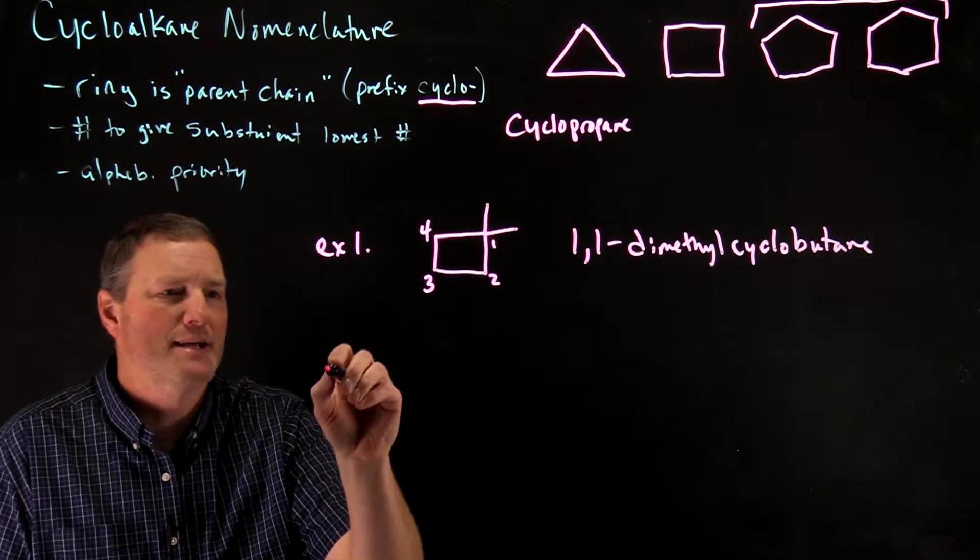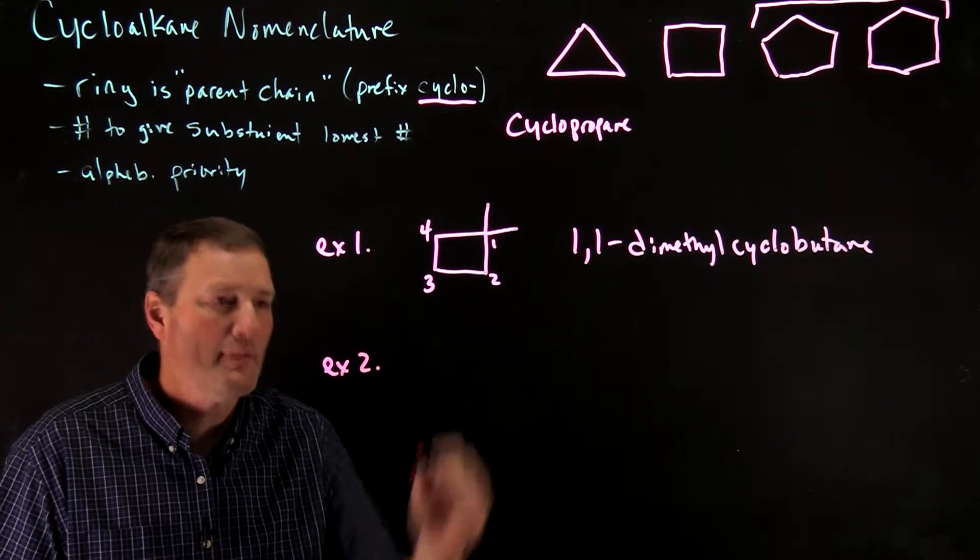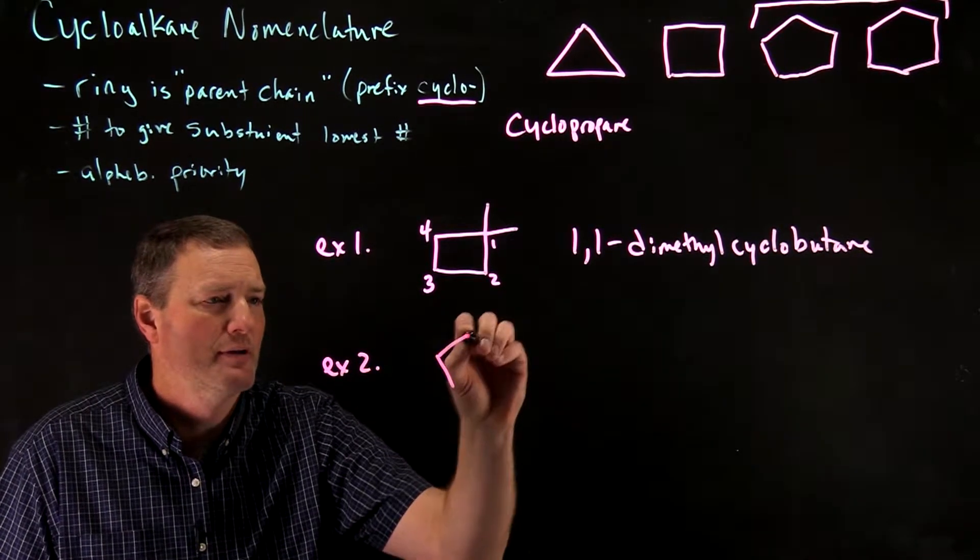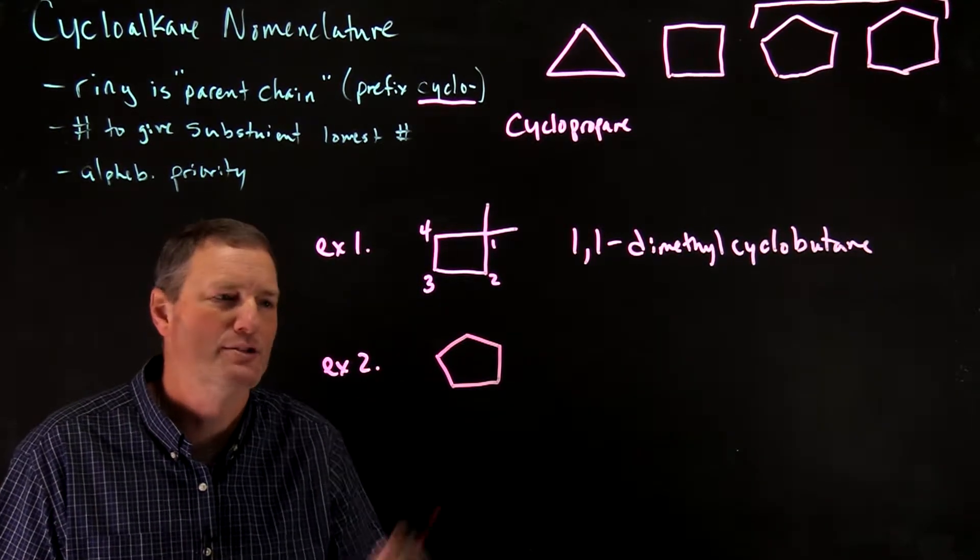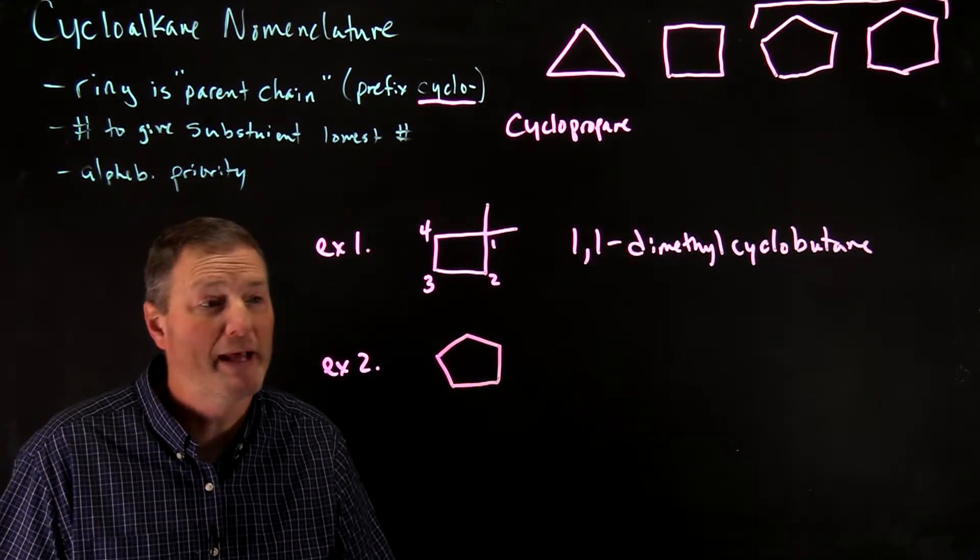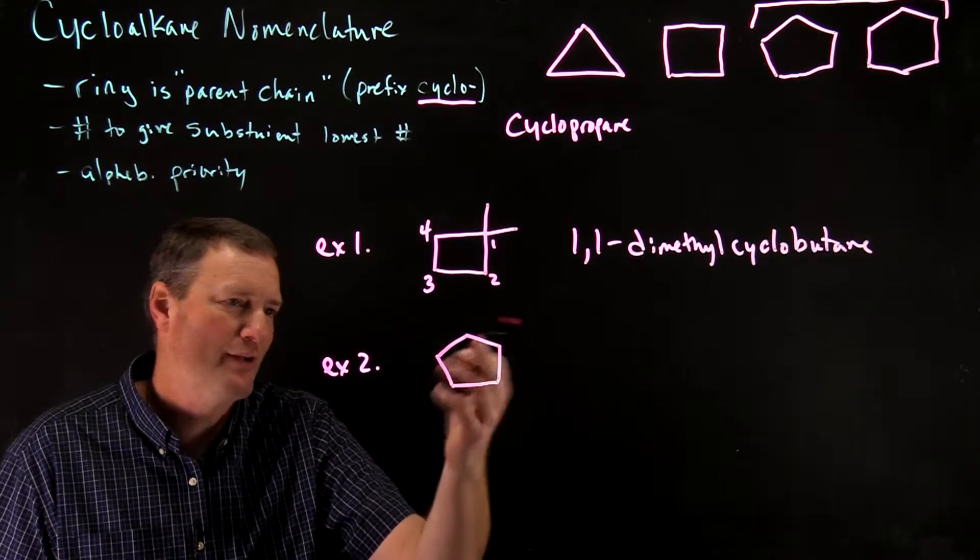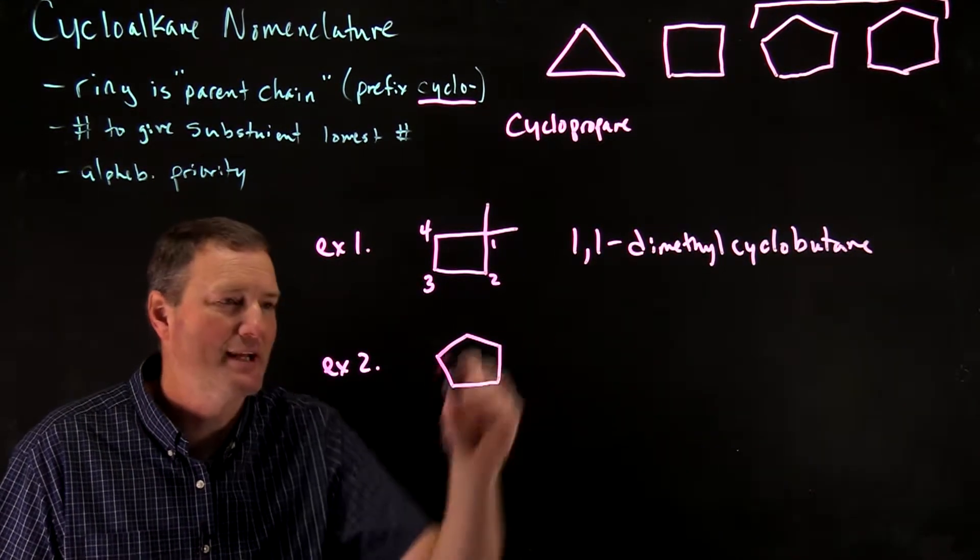Let's look at another example. Let's look at a cyclopentane derivative. And it's going to take a little practice to get to drawing these. So you're basically just drawing a pentagon here. And each change in angle obviously represents a carbon with its associated hydrogens.